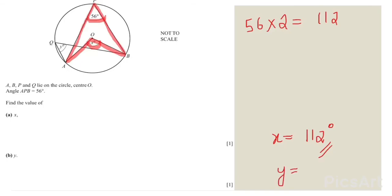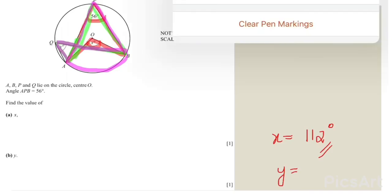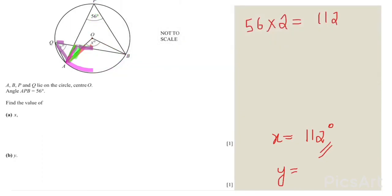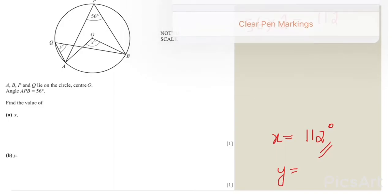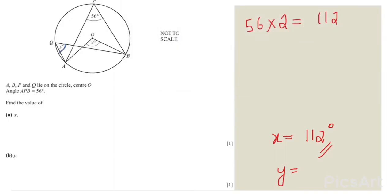Now let's find y. Looking at the shape for y: if you remember the theorem, angles in the same segment are equal. When you draw an arc — going from one point at the circumference to another — this means the angle of 56 degrees is equal to angle y. Therefore y equals 56 degrees.